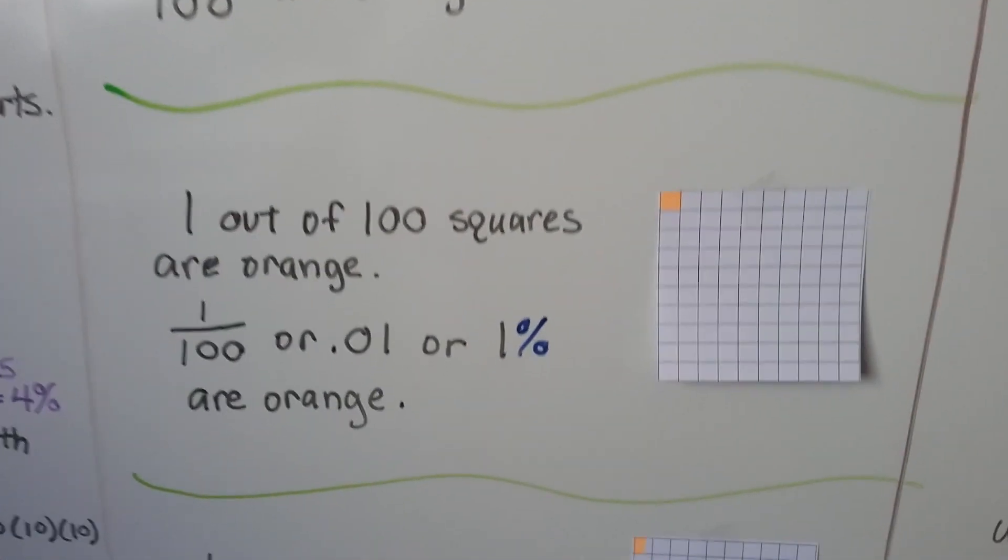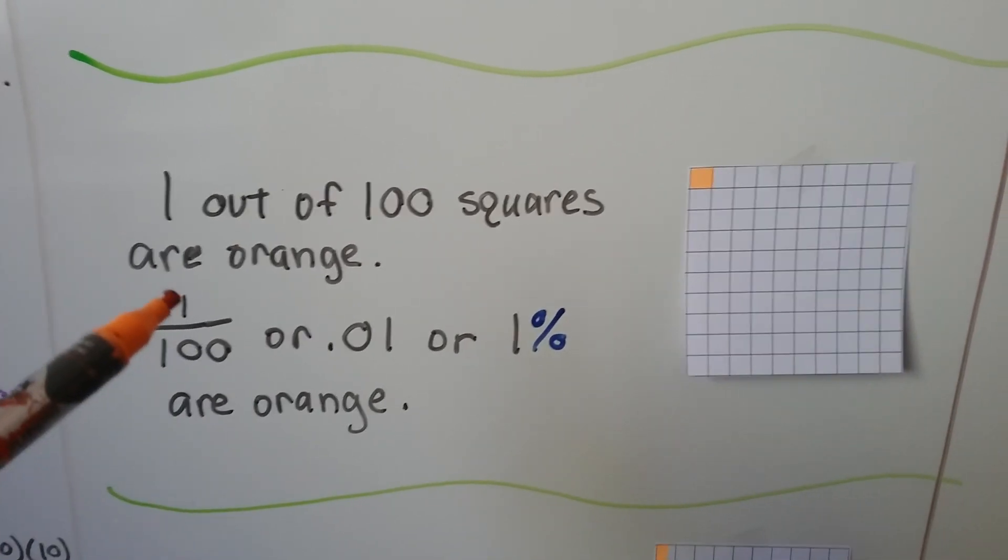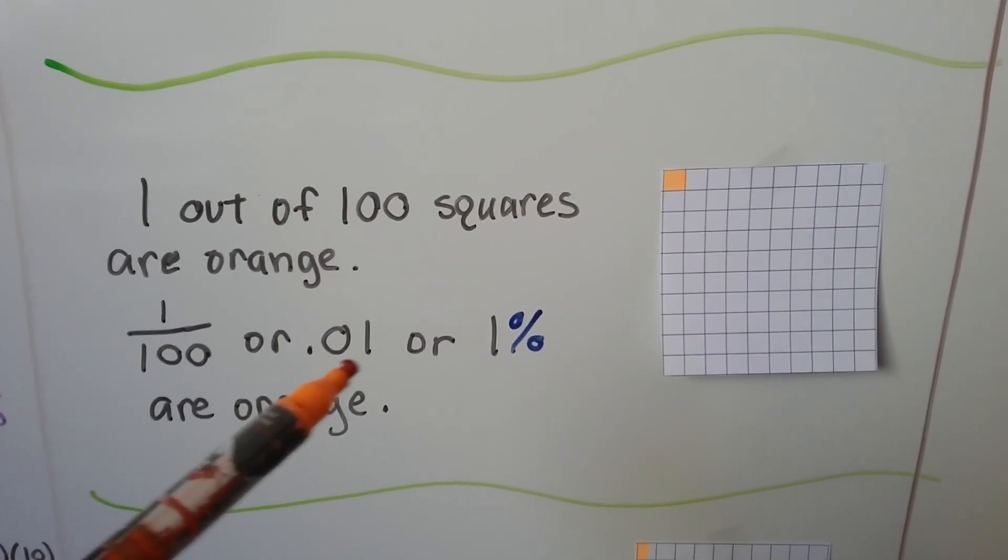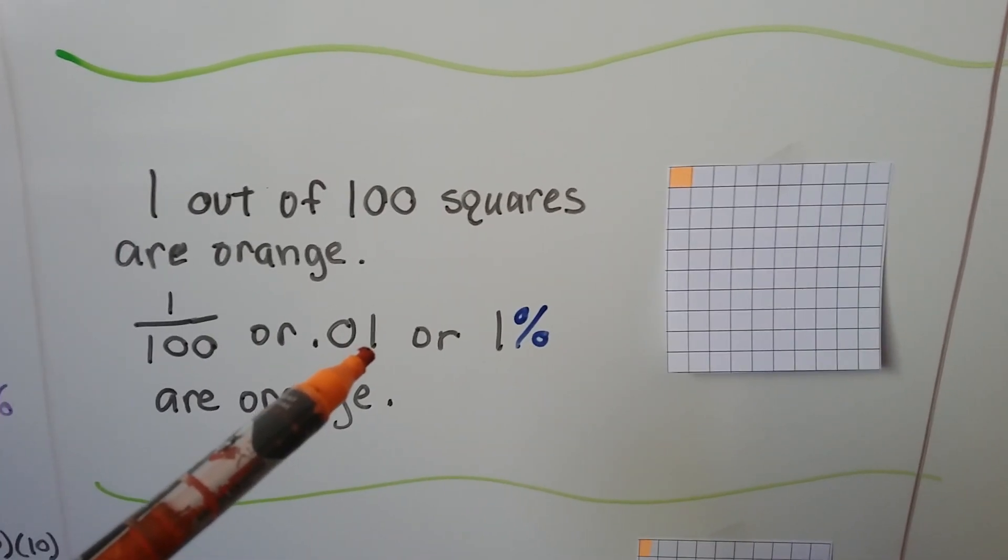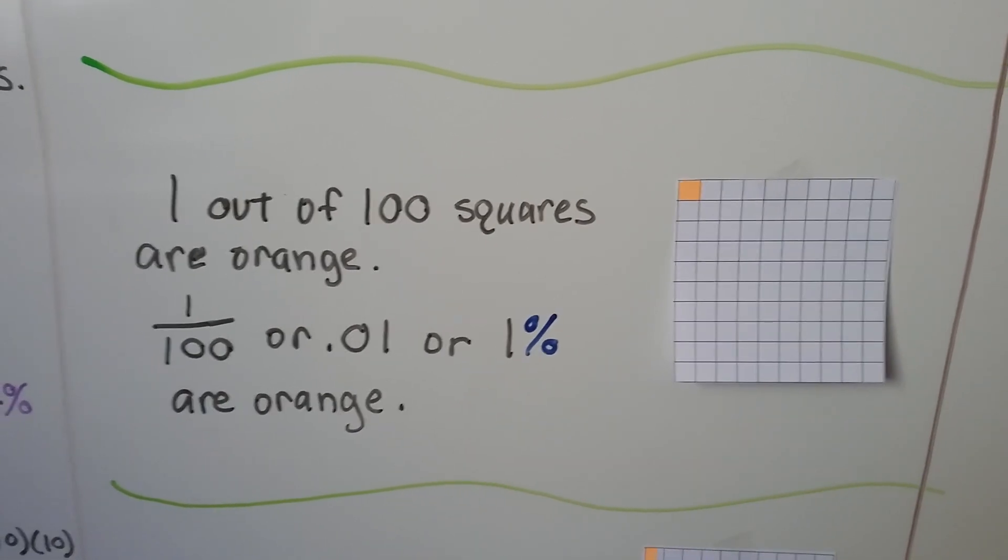Now look at this one. We have our 100 squares, but only one of the 100 are orange. That means 1 one hundredth is orange or 0.01. Because that's the tenths and that's the hundredths. Or 1% are orange. One out of a hundred.